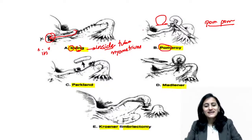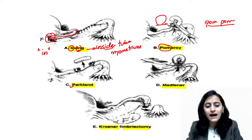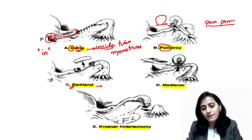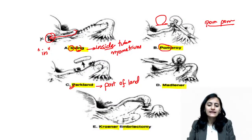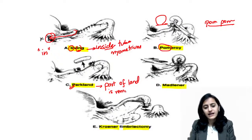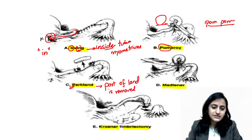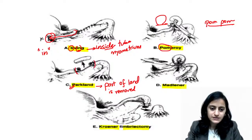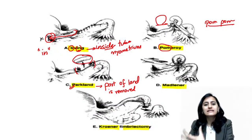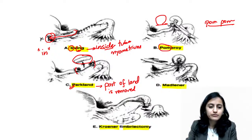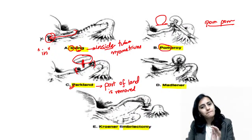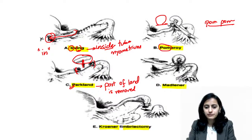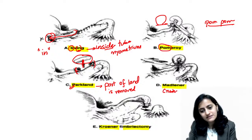For the Parkland technique, the trick is: a part of land is removed. As you can see here, this part of the fallopian tube — the entire 'land' — is cut and removed. That is your Parkland technique: a part is removed.